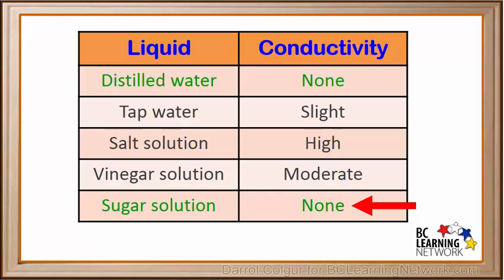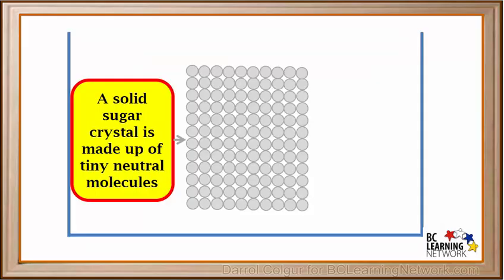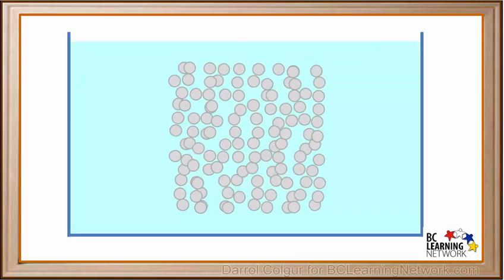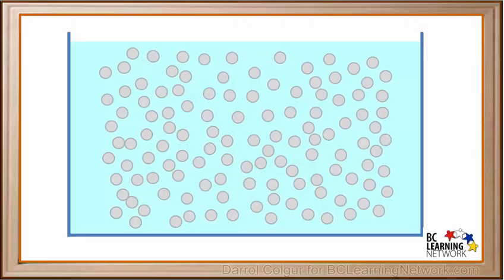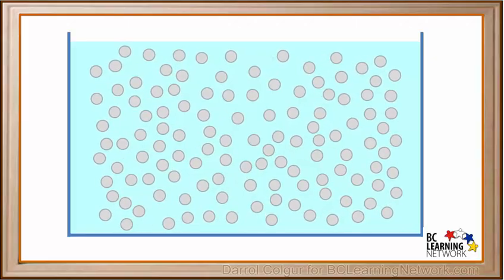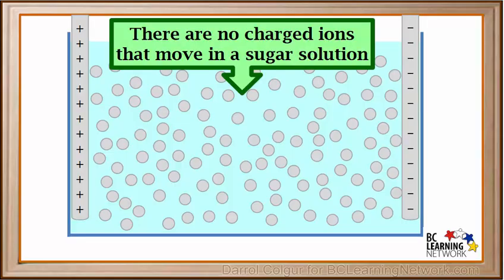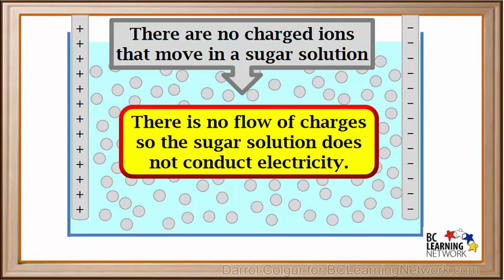Our sugar solution did not conduct electricity at all. If we look at a model of a sugar crystal, we see that it is made up of particles called neutral molecules. Neutral molecules are not charged like ions are. When water is added, sugar molecules also break away from the crystal and spread out. However, unlike ions from salt, sugar molecules are not charged. When we dip our probes into the sugar solution, the neutral molecules are not attracted to the probes. There are no charged ions that move, so there is no flow of charges, and sugar solutions do not conduct electricity.